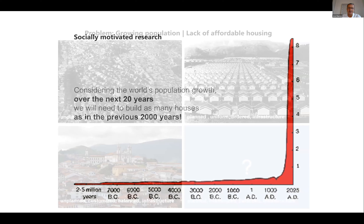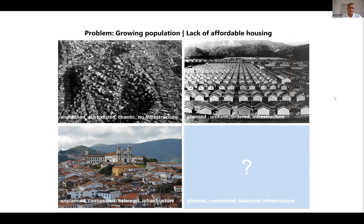This slide shows different answers to the problem. On the top left corner is an informal settlement — when people cannot afford to buy a house on the market they build houses themselves, which has many problems. On the right-hand side is the usual governmental approach: the use of repetition on a very large extent, which also causes some problems.